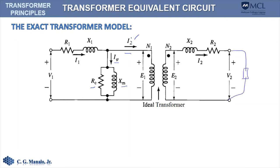That current accounts for the current drawn by the secondary if we have a load connected. Take note of the following relationships: I sub 2 prime divided by I sub 2 must equal 1 over A, and E sub 1 over E sub 2 must equal A, where A is N sub 1 over N sub 2.